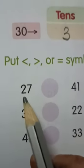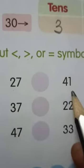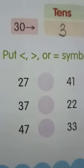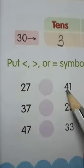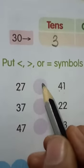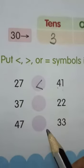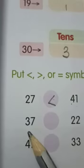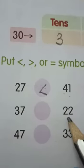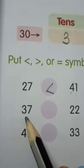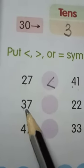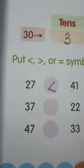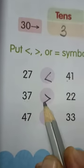Here we have 27 and 41. Which one is bigger? First we compare the numbers on the 10's place: 2 and 4. So 4 is greater. Open mouth towards the bigger number. Next, here we have 37 and 22. On the 10's place, we have 3 and 2. So 3 is greater than 2. Open mouth towards the bigger number.